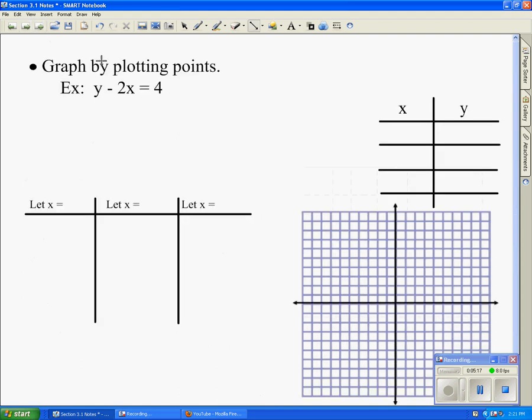The next question asks us to graph by plotting points. This is a different method, and the first thing we need to do when we're plotting points is we want to solve for y. To get y by itself, we need to move 2x to the other side. So, y = 2x + 4. Once we do that, we want to choose any values that we like for x and substitute them in and solve for y.